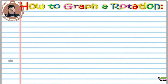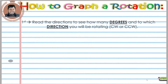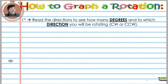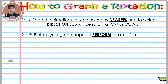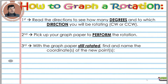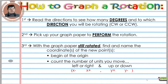Now let's look at how to graph a rotation. Step one, you'll have to read the directions to see how many degrees and to which direction you will be rotating — clockwise or counterclockwise. Step two, pick up your graph paper to actually perform the rotation. Then step three, with the graph paper still rotated, find and name the coordinates of the new points.